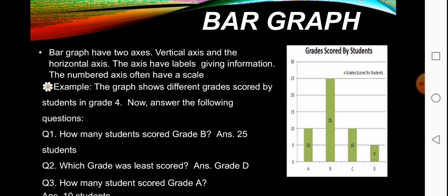Now answer the following questions. See the graph carefully. How many students scored grade B? Check the bar graph and look at the height of the graph. Now its answer is 25 students.